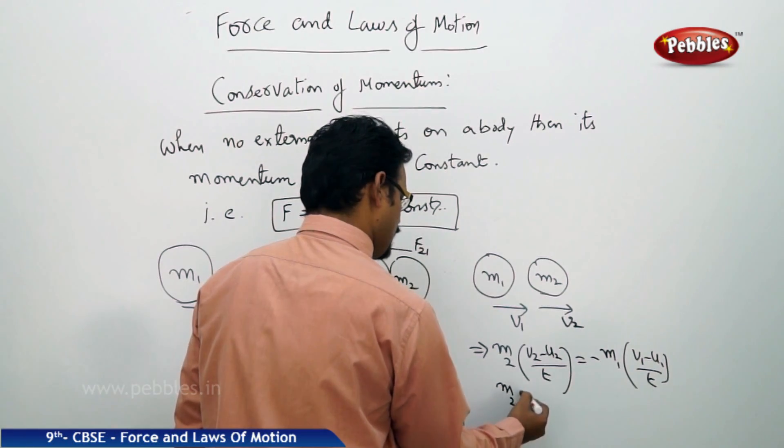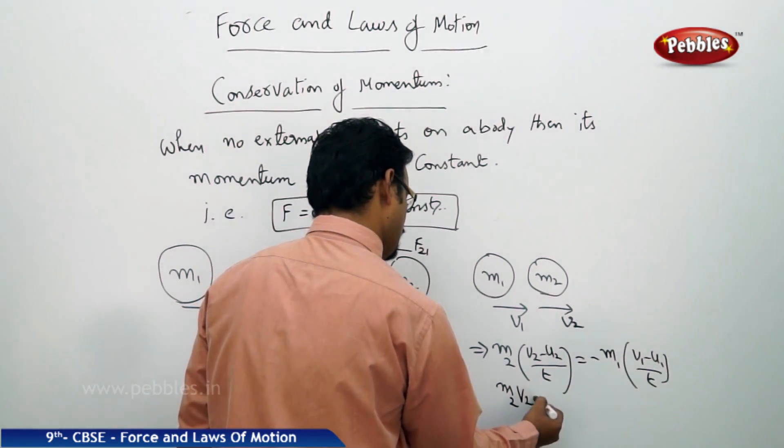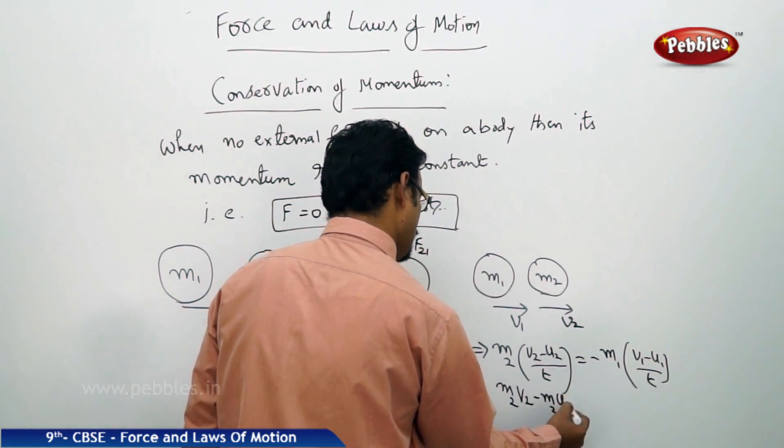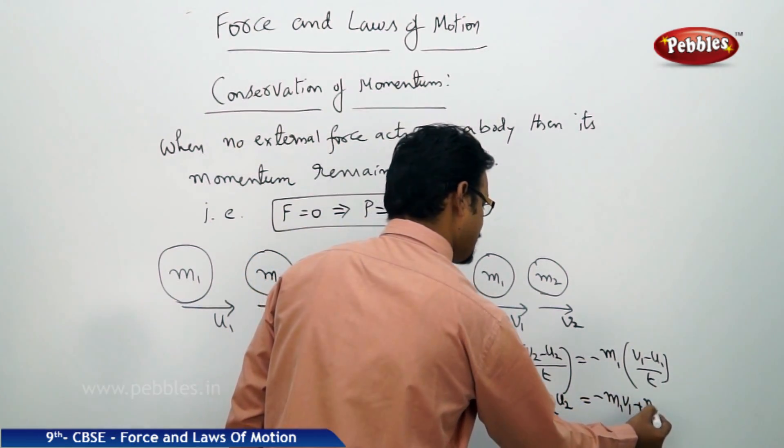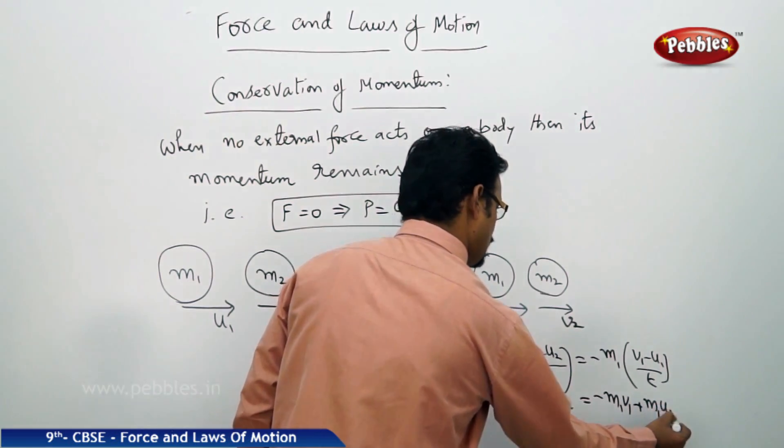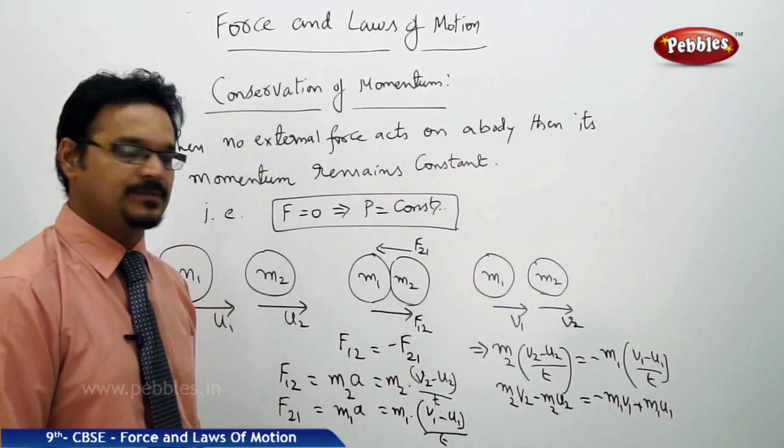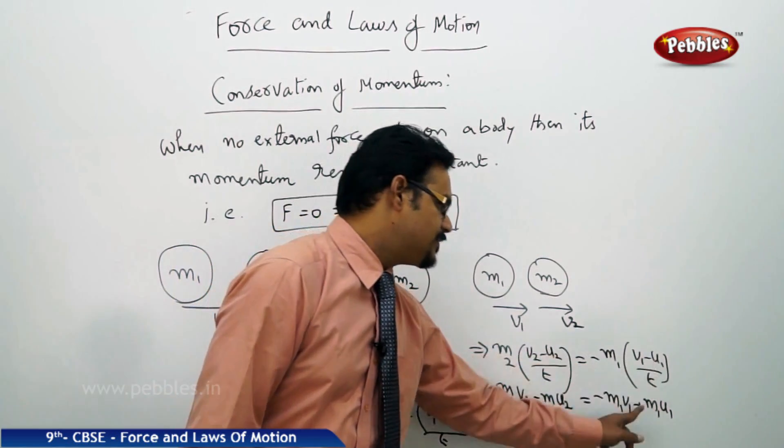So what you get: m2 v2 minus m2 u2 equals to minus m1 v1 plus m1 u1. Just check once: minus into minus, which is plus.